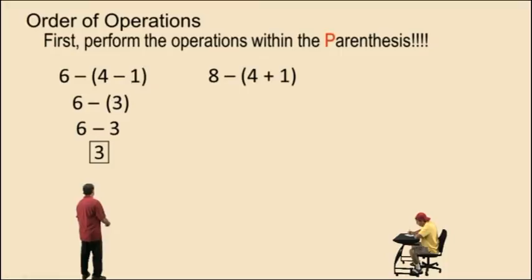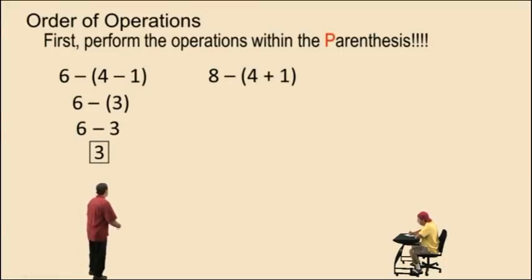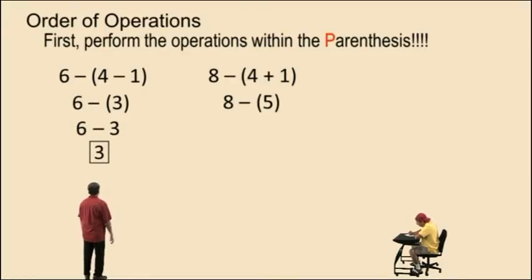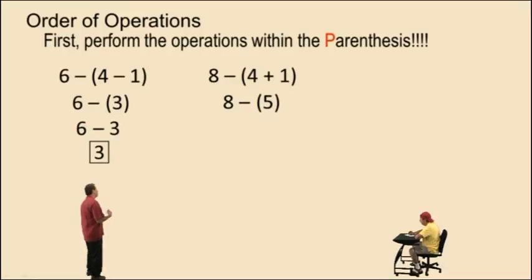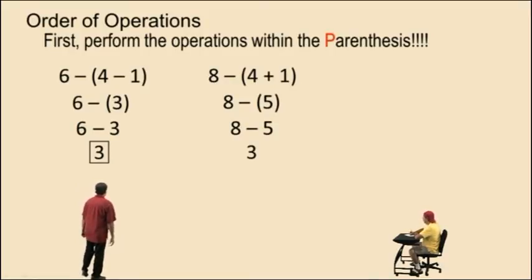Let's take a look at this one: 8 subtract 4 plus 1. Notice the sum of 4 and 1 is in the parentheses, so we'll simplify that first. That's 5. Bring down our work. And again, since we're subtracting a positive 5, we don't require those parentheses. So 8 subtract 5 is 3.